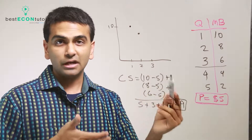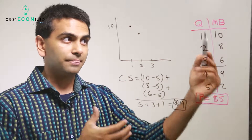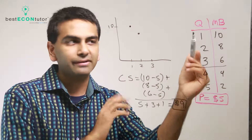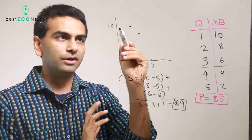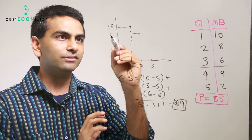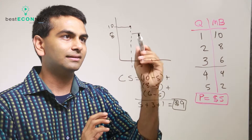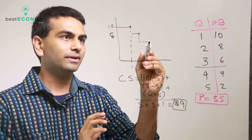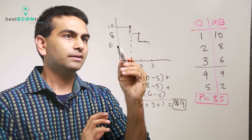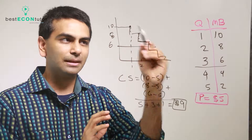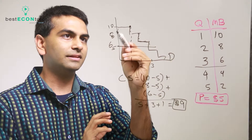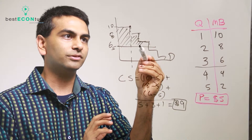Here's how your book's probably going to present it. We're assuming you can't buy a fraction of a good, so your demand curve is like a step function — ten dollars for the first good, eight for the second, six for the next, and so on, making a horizontal line for each. So if you have to pay five dollars, this area — above the price line and under the step-function demand curve — is technically your consumer surplus.